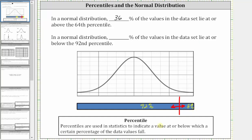Going back to the statement, we're looking for the percent of values in the data set that lie at or below the 92nd percentile, which would be 92%.